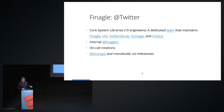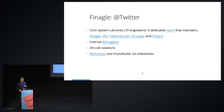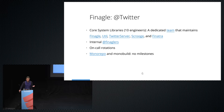At Twitter, we have a team called Core System Libraries — about 10 engineers — that maintains libraries powering Twitter's distributed infrastructure. We maintain Finagle, Util, Twitter Server, Scrooge, Finatra, and a bunch of metrics libraries. We also have an internal on-call rotation to support teams during production issues. We run a monorepo and monobuild, meaning we always run Finagle from master source. So when we do an open source release, the code has been stress-tested in production for several months across thousands of services.